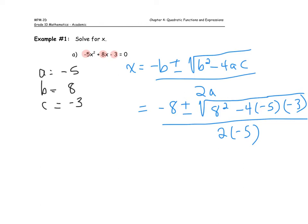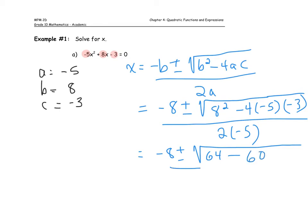Simplifying: negative 8 plus or minus. Now, 8 squared is 64. Negative 4 times negative 5 gives positive 20; positive 20 times negative 3 gives negative 60. So I put in negative 60, all divided by 2 times negative 5 which is negative 10. What I have under the square root simplifies further to give negative 8 plus or minus the square root of 4, all over negative 10.